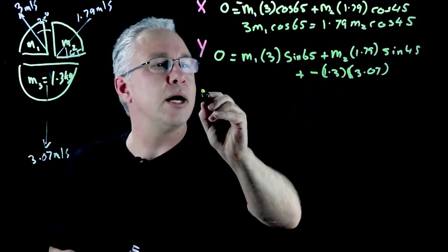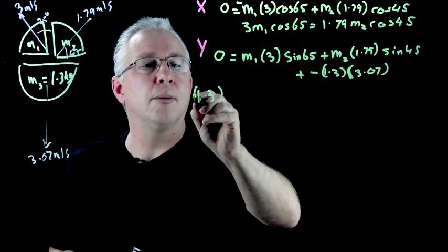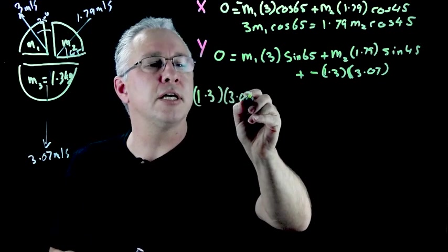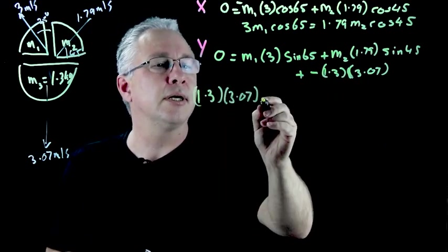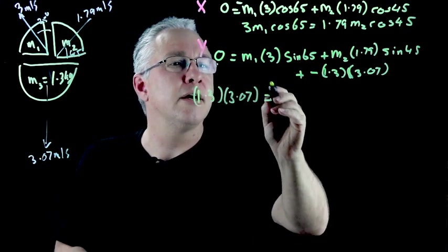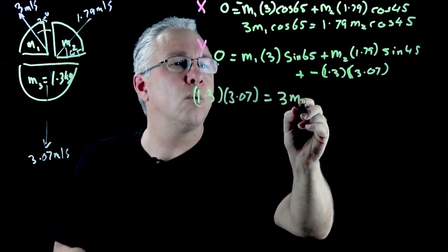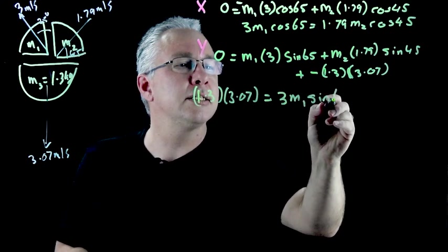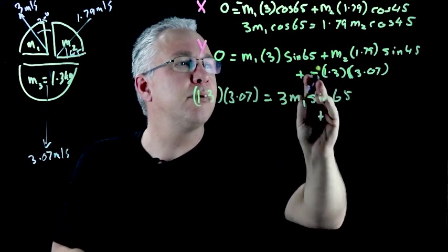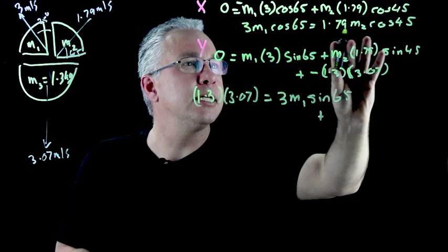So I'm going to take this which is my 1.3 multiplied by my 3.07 on this side of the equation and then what I have here is I have 3 m1 sine 65 plus but remember this here is equal to that there. I can replace that so I can actually use this.